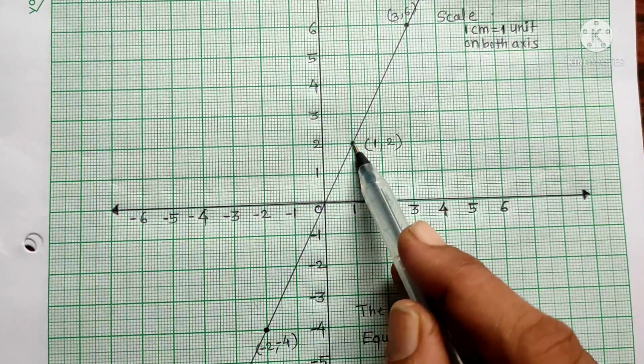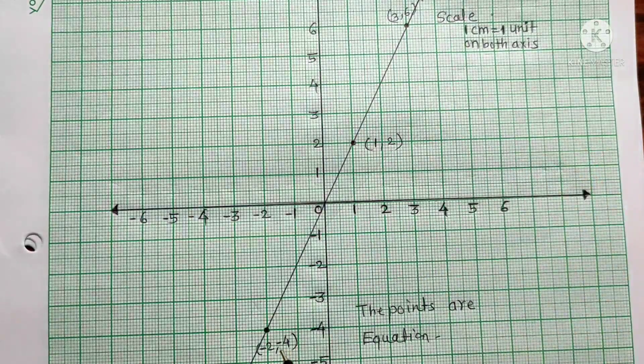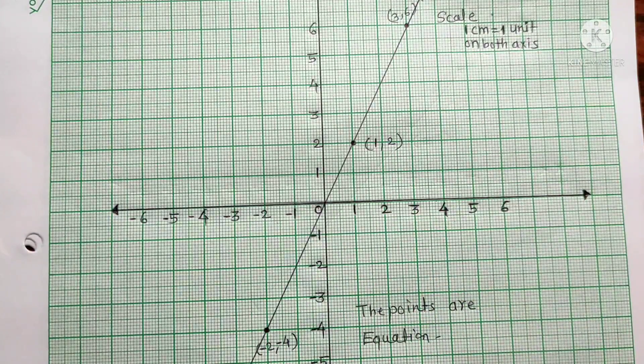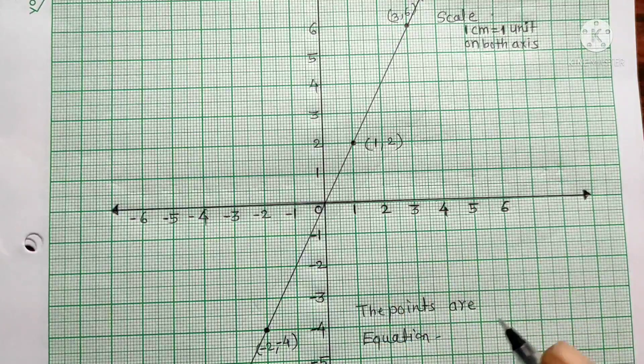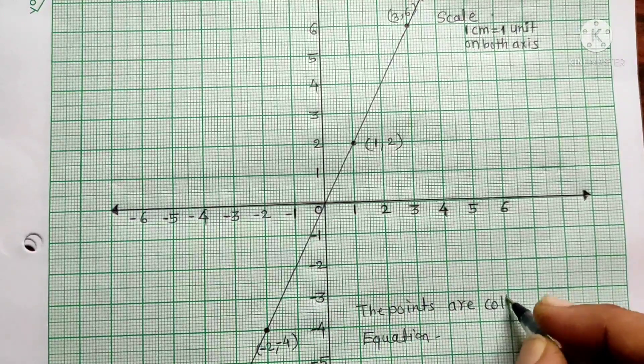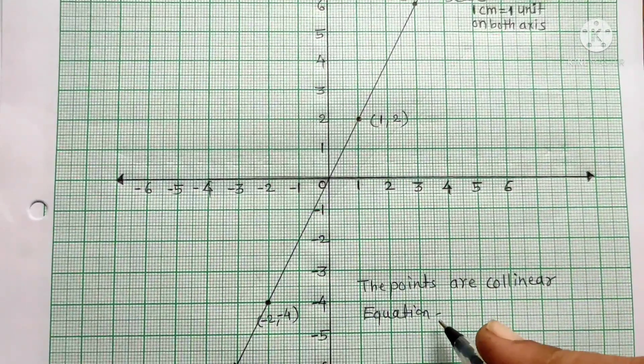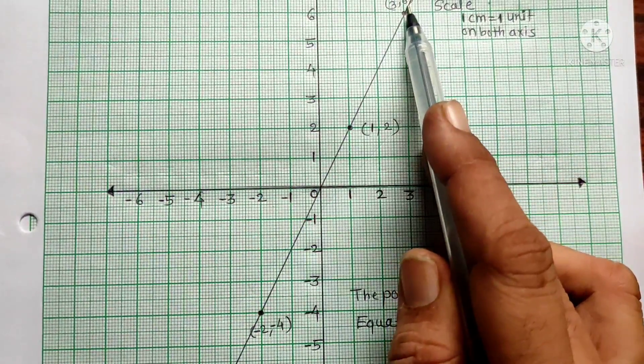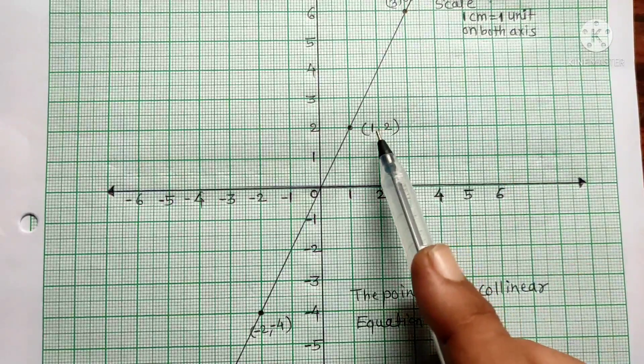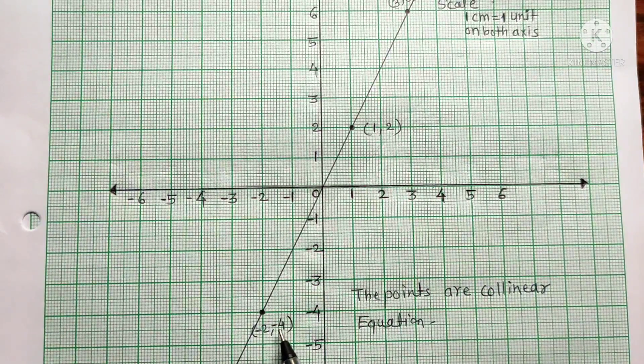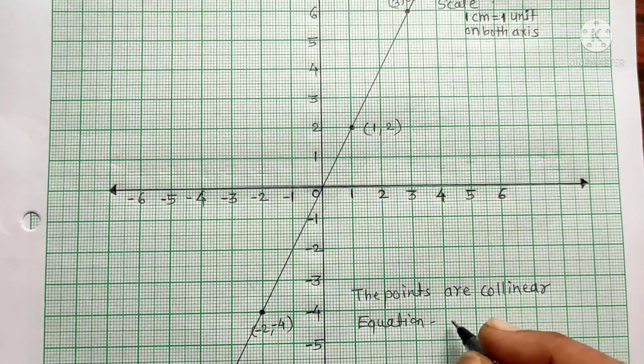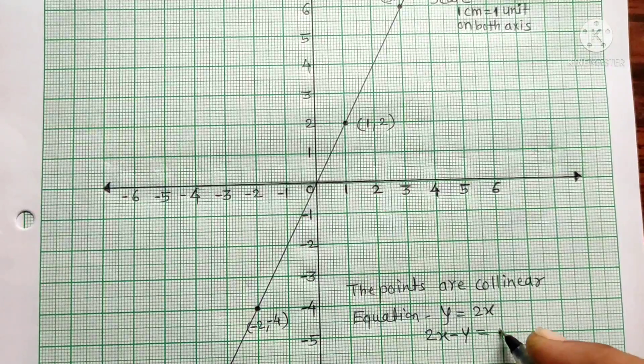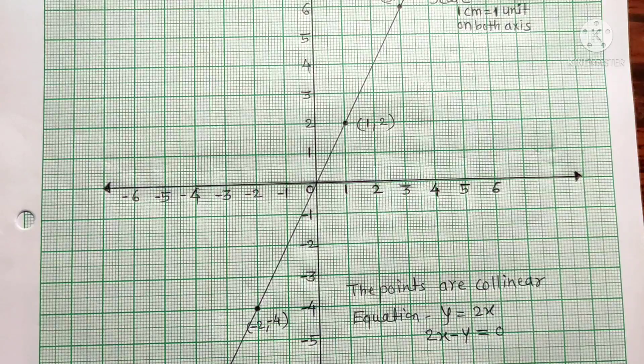X-axis, y-axis are drawn with scale. Plot the 3 points: 1 and 2, then 3 and 6, then minus 2 and minus 4. Draw a line through these 3 points. These points are collinear. The equation is, looking at the points, x is 3 and y is 6, so y is equal to 2x. The equation is 2x minus y is equal to 0.